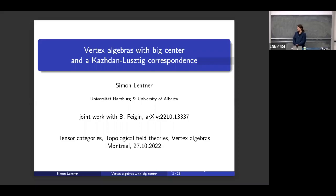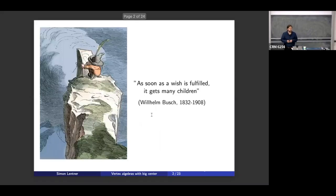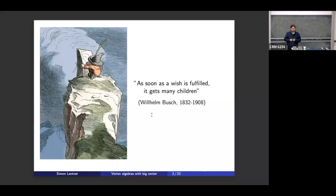Lentner will tell us about vertex algebras with big center and a Kazhdan-Lusztig correspondence. Thank you very much for the invitation and for organizing these several weeks, which I enjoy very much — being together again with people and talking. This is a joint work with Fagen on vertex algebras with big center. The best summary I could think of was the following quote by Wilhelm Busch: 'As soon as you get a wish fulfilled, it gets many children.' That's something we do in mathematics often, and it's especially true for this topic.